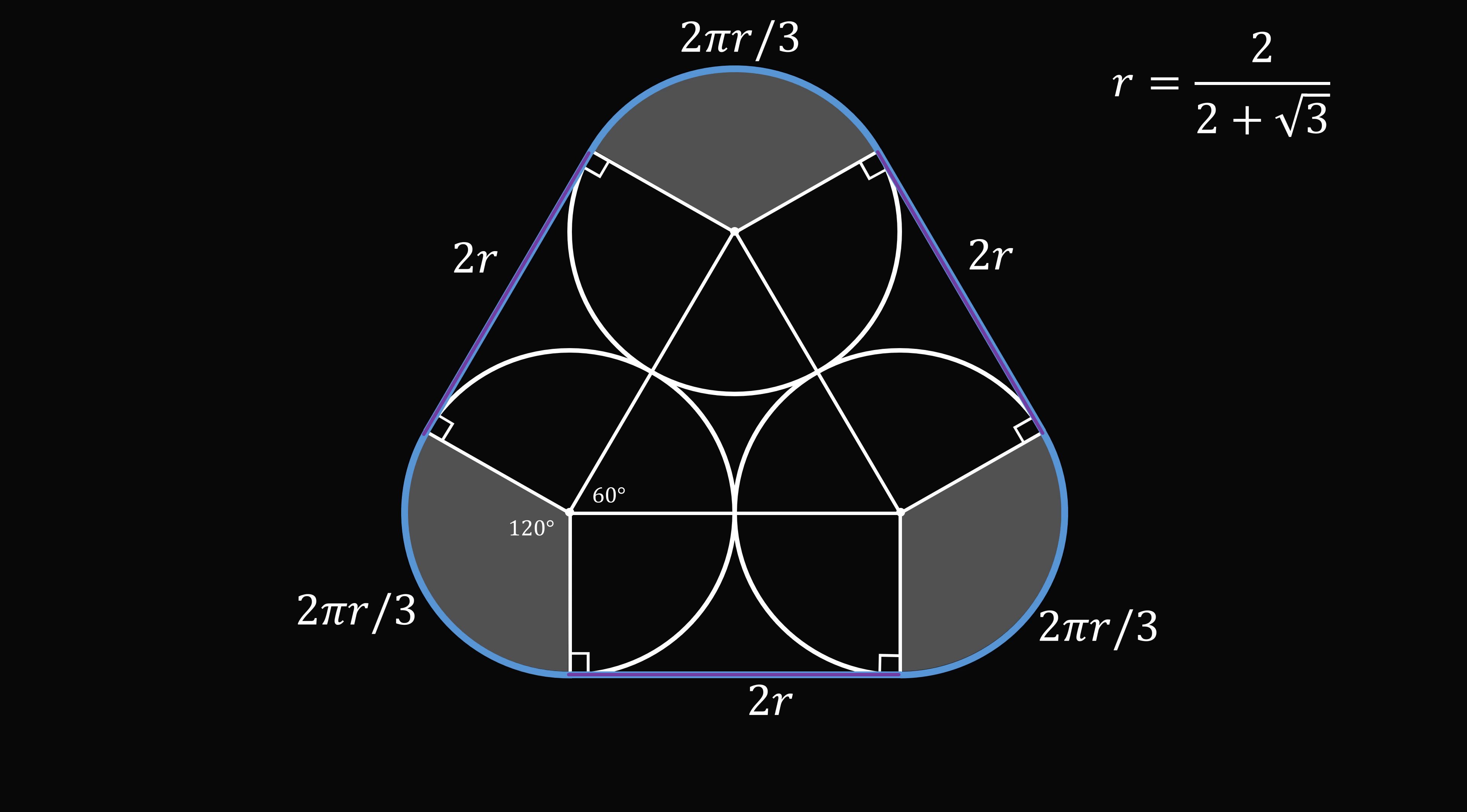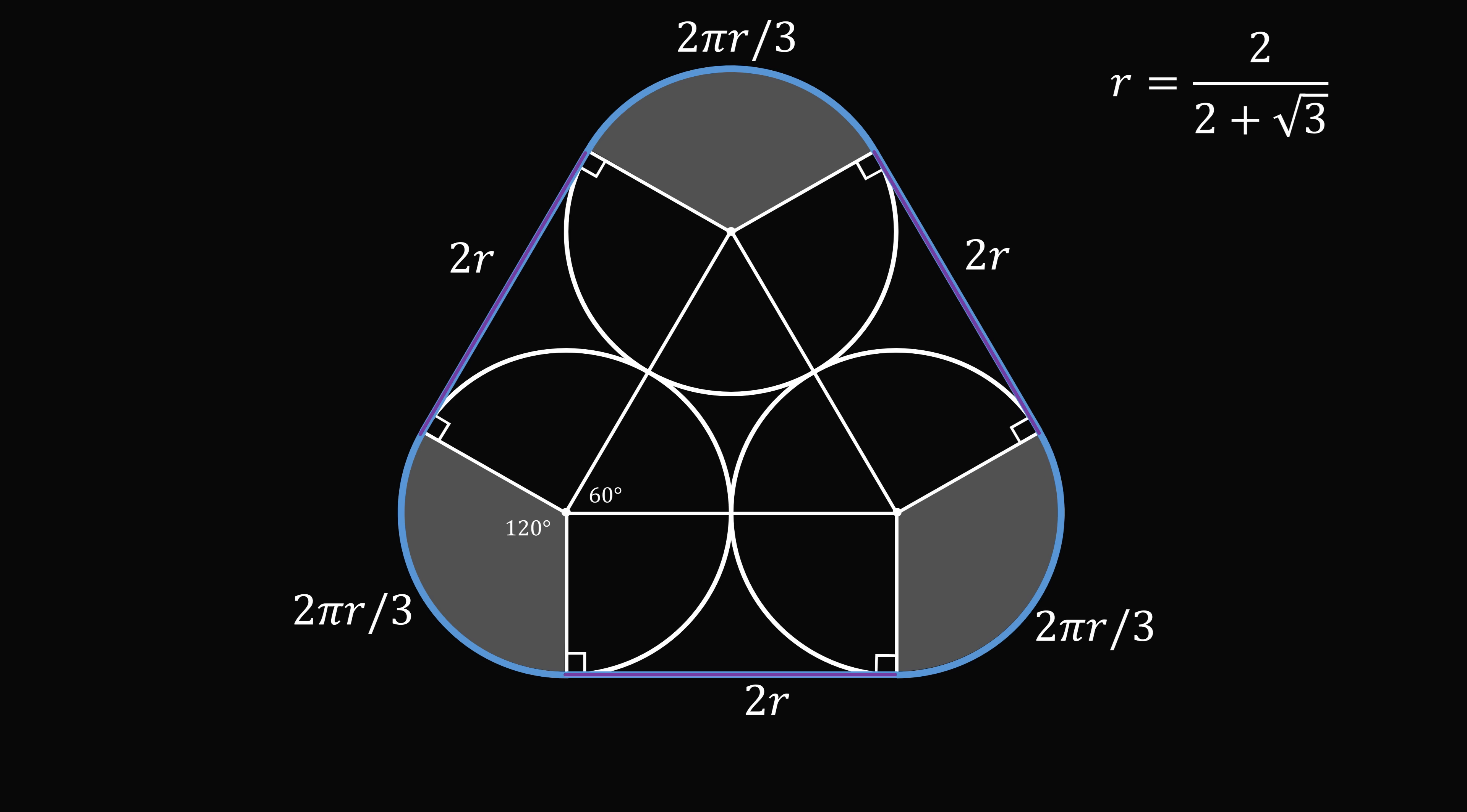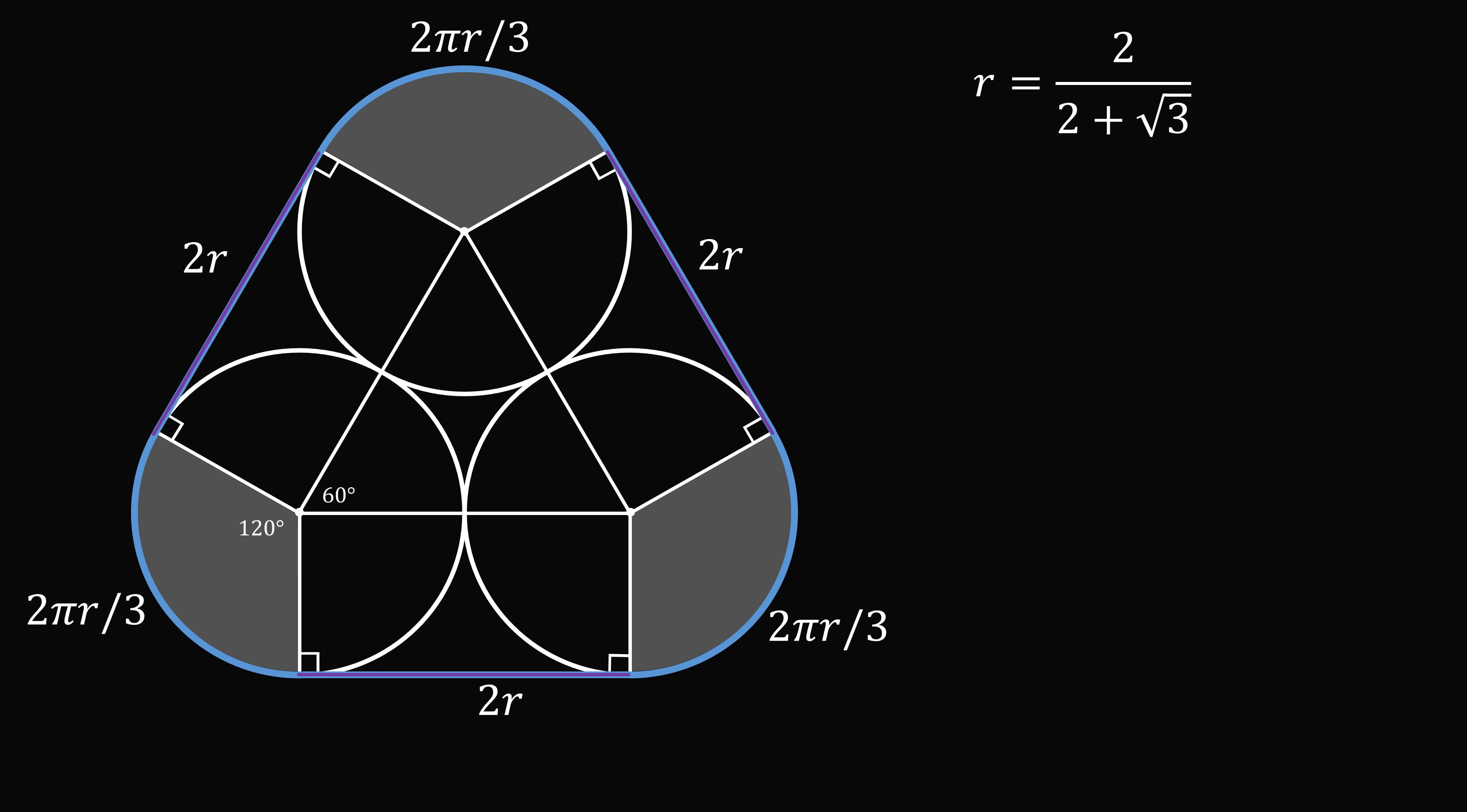We now have an expression for the length of the elastic band in terms of r. So we'll just add up all of these lengths. We have 2r plus 2r plus 2r plus 2πr over 3 plus 2πr over 3 plus 2πr over 3. This will be r multiplied by 6 plus 2π. But we know that r is equal to 2 divided by 2 plus root 3, so substituting in and simplifying, we get 12 plus 4π all over 2 plus root 3, and this is approximately equal to 6.58 meters. And that's the answer.